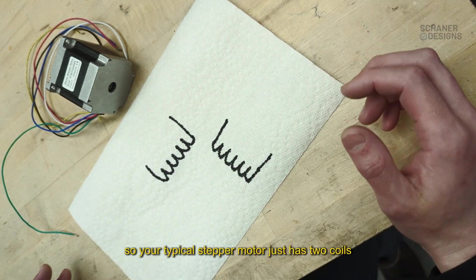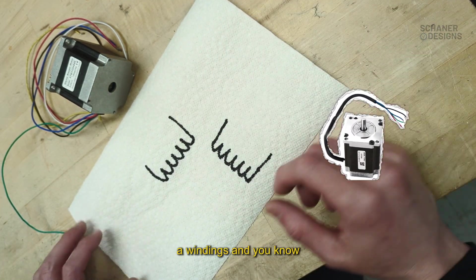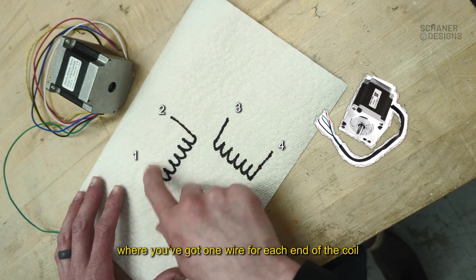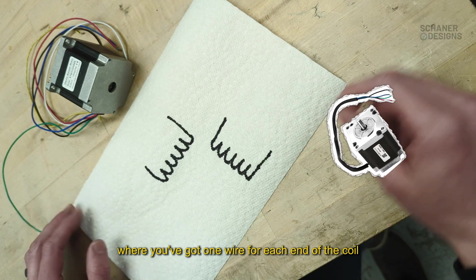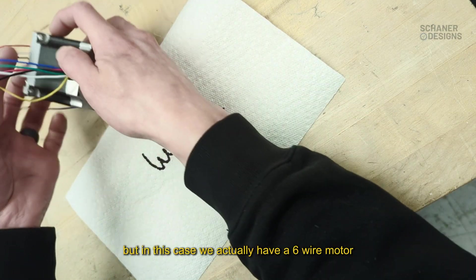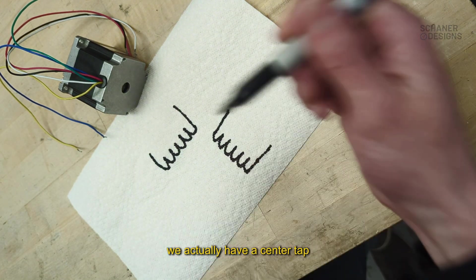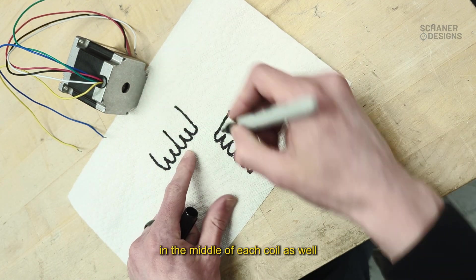Your typical stepper motor has two coils of windings. A four-wire motor would have one wire for each end of the coil, but in this case we actually have a six-wire motor. What that tells us is we have a center tap in the middle of each coil as well.